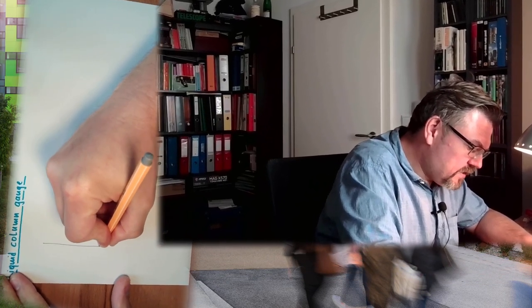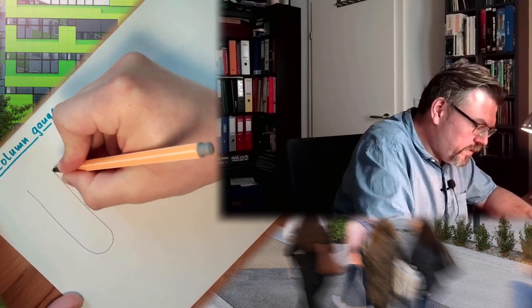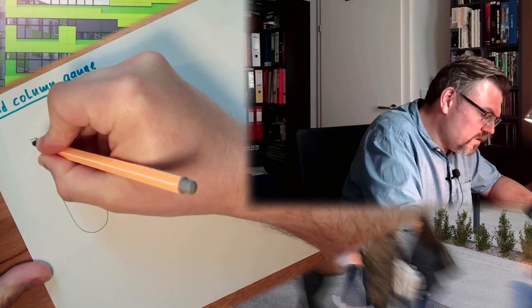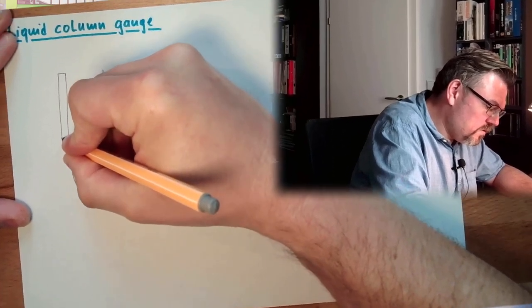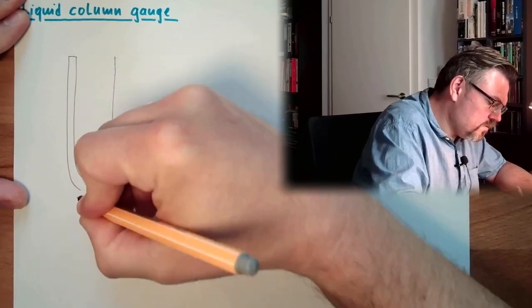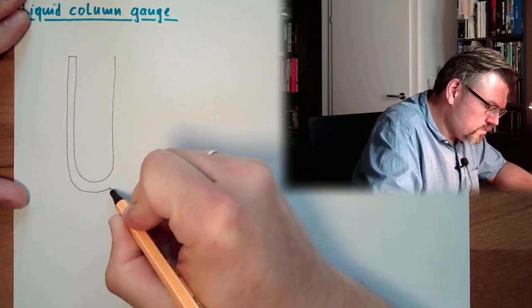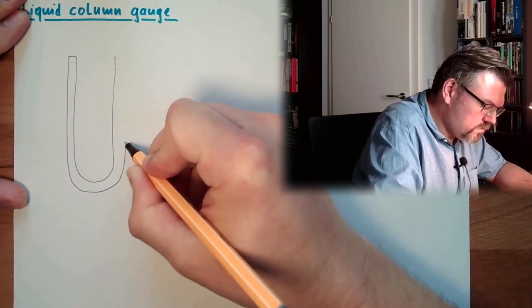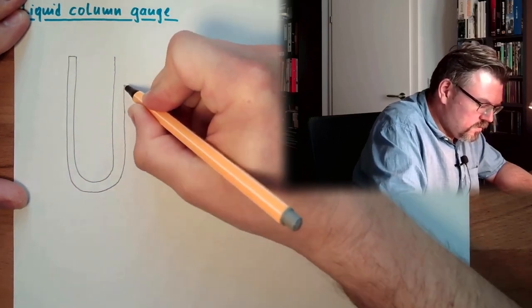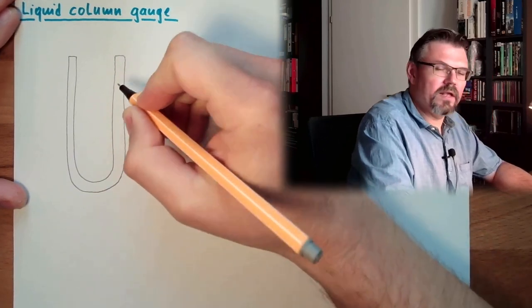So how is it working? Usually you have a u-shaped glass. You have a u-shaped glass thing and this glass thing is filled with liquid. This is why it's called liquid column. So this is a u-shaped glass.